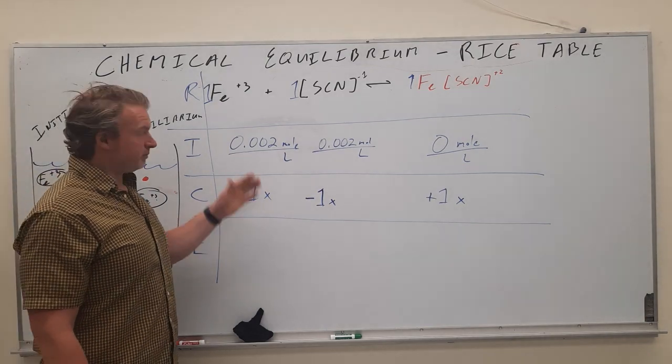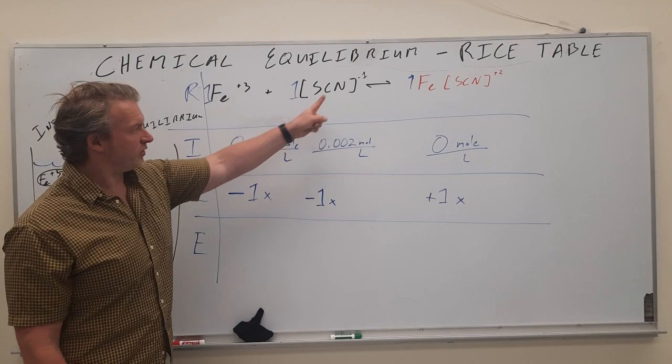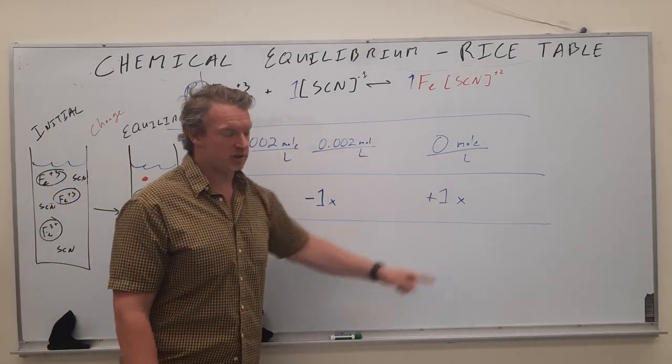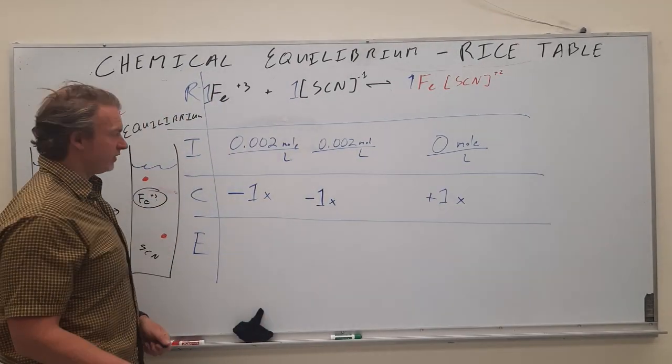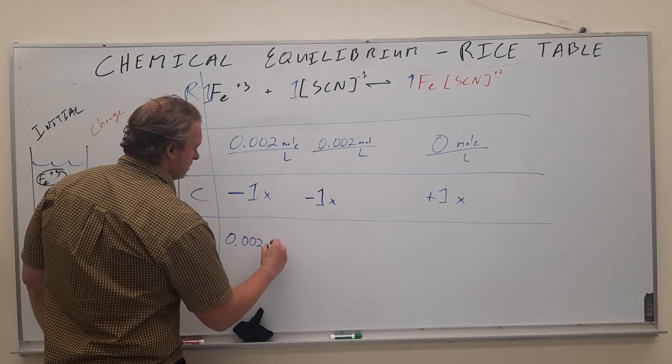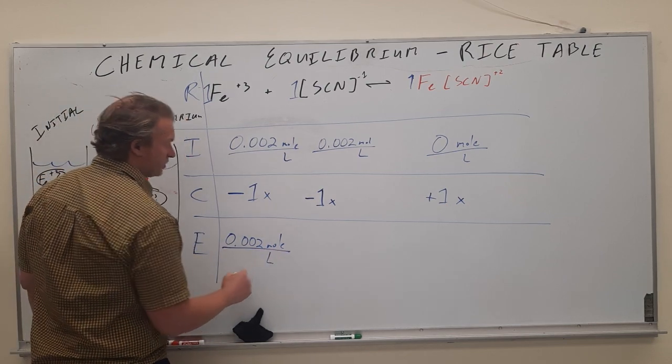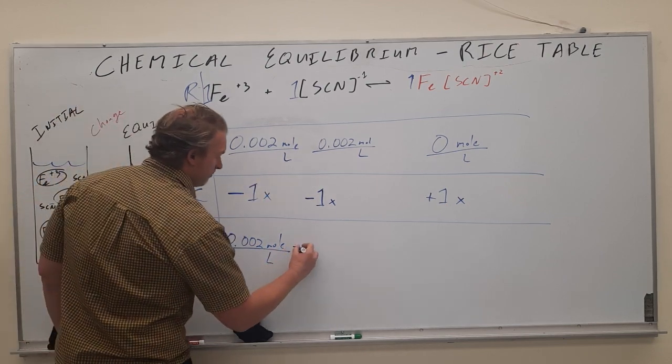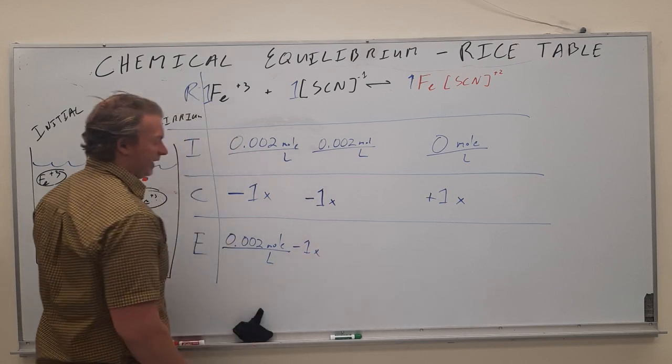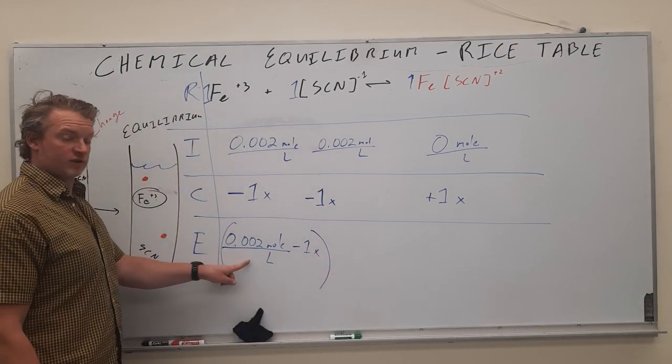So at equilibrium, because we have everything organized nice and vertically, keeping everything under its spot in the reaction. In this final line here for equilibrium, we type in, or sorry, the change at equilibrium, it's going to be whatever our starting concentration was, minus 1x. Like that is going to be our answer for the equilibrium.